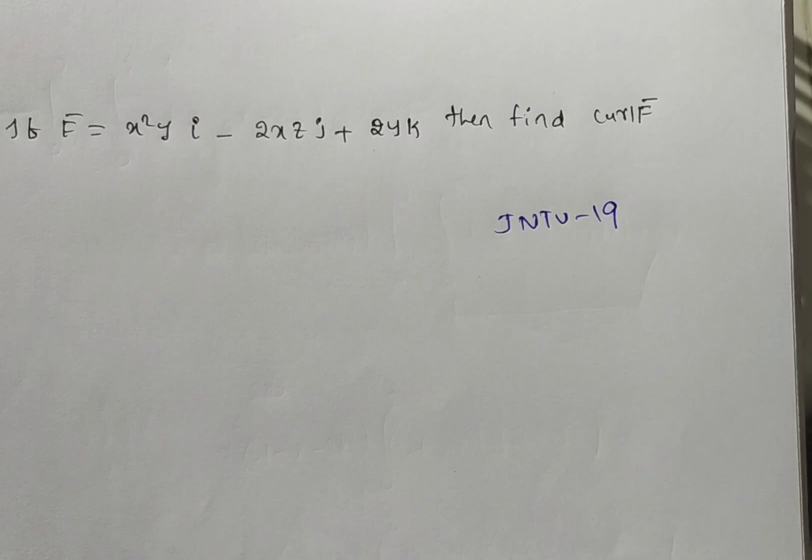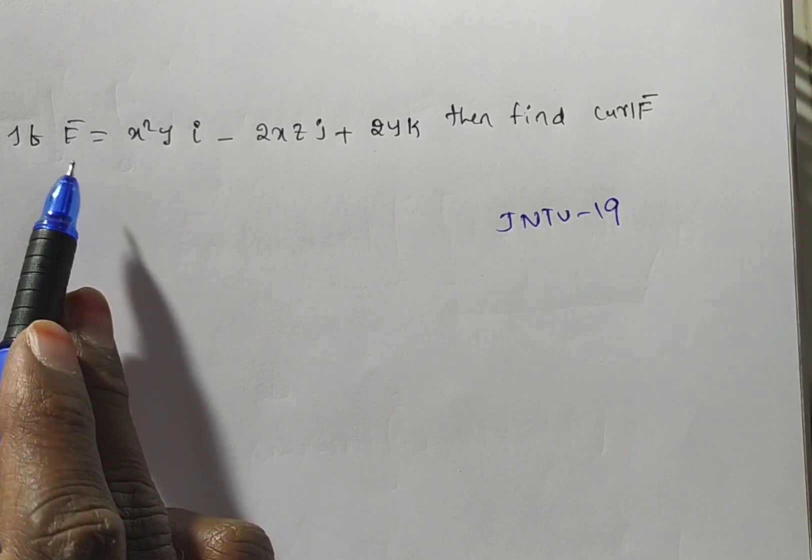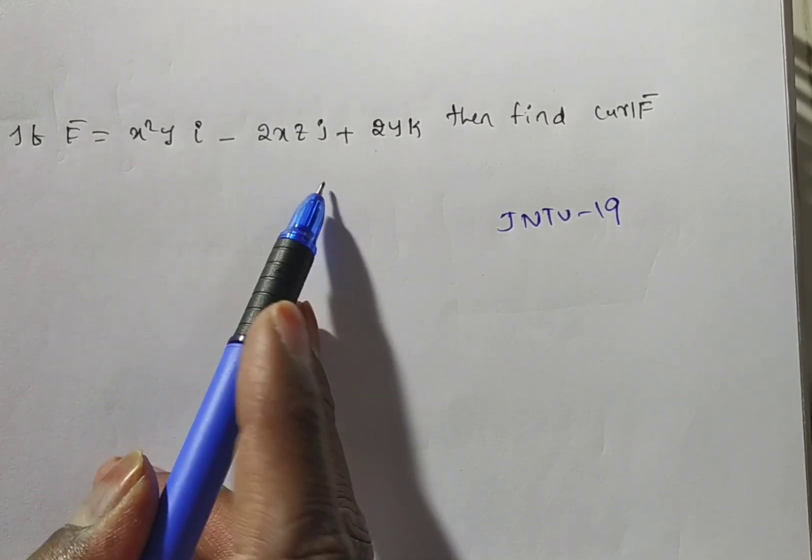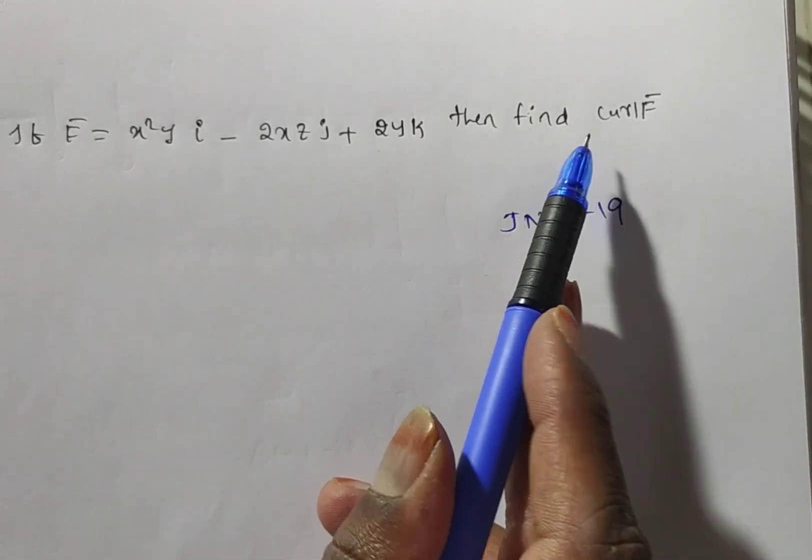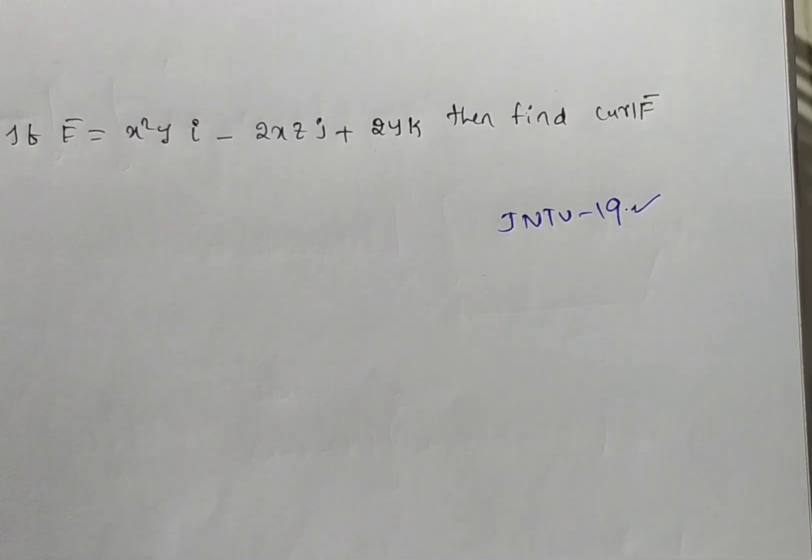Hi friends, now we are solving a problem on curl. You see they are given a vector point function, for this function we are finding curl F bar. This problem came in JNTU 2019.